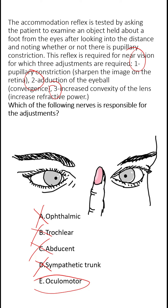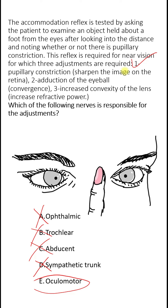The other adjustment required for this reflex is adduction of the eyeball, which is served by the two medial rectus muscles, and these are supplied by the oculomotor nerve. So the sphincter pupillae, the medial rectus, and the ciliary muscle are all supplied by fibers of the oculomotor nerve — and hence the oculomotor nerve is responsible for all three adjustments.